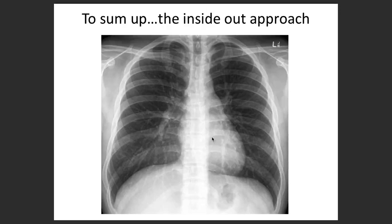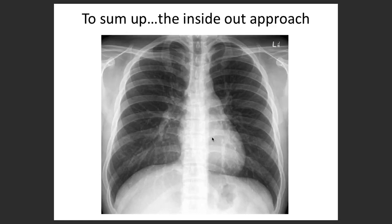Can you recall what the letters stand for? A for airway, B for bones, C for cardiac shadow, D for diaphragm, E for effusion, F for fields of lungs, G for gastric bubble, H for hilum and mediastinum. So how do you interpret the chest x-ray? A for airway, B for bone, C for cardiac shadow, D for diaphragm, E for effusion, F for lung fields, G for gastric bubble, H for the hilar mediastinum.